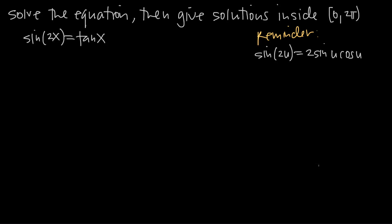In this video, we're going to be talking about how to solve trigonometric equations and then give a list of solutions that fall within the interval 0 to 2π. Notice here that because we have this square bracket, we're including the value 0. And here, because we have the parentheses, we're excluding the exact value 2π.